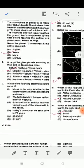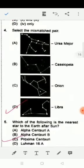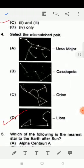Now have a close look at this particular picture. You have four pictures over here: Ursa Major, Cassiopeia, Orion, and Libra. They have asked you which is the mismatched pair, meaning the name written does not match with the stars shown.